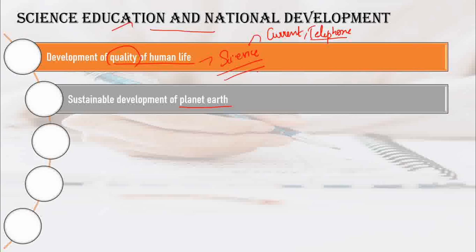You also learn about the environment of life and sustainable development of planet Earth. Sustainable development means that as we grow today, future generations will also be able to grow. That is what sustainable development means.